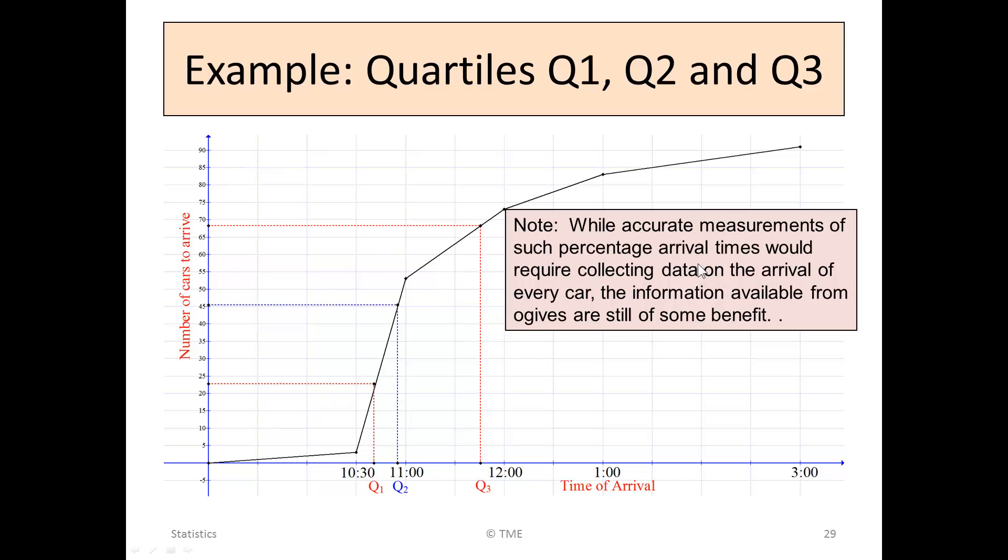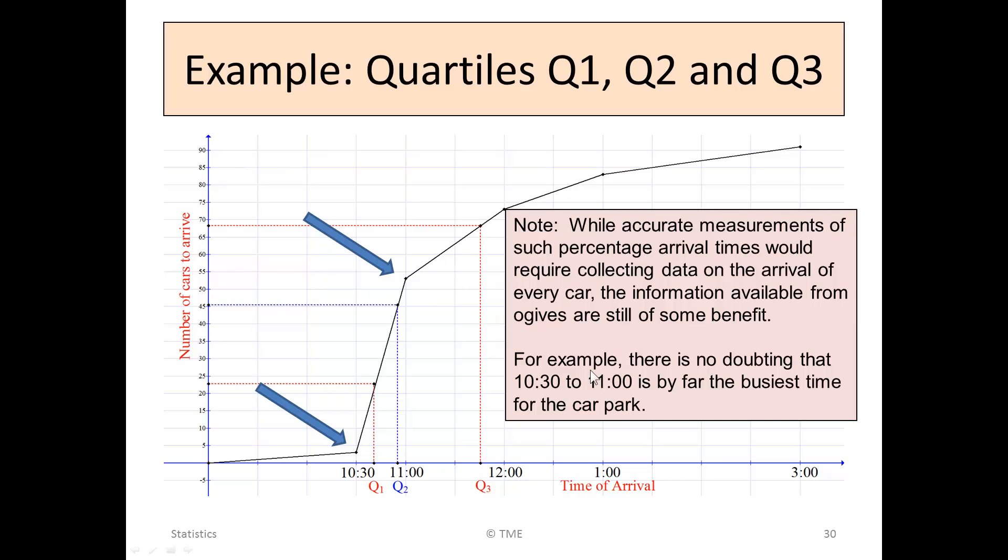While more accurate measurements need to be done, we'd have to collect every single time of every single car, but the information from the graph is still useful from the ogive. For example, we can see that between 10:30 and 11, these two points, the vast majority of the cars arrived in that space. We can see that that's the busiest time. Perhaps we might need more staff on at the car park at that time, or greater care and attention. That's the busiest period. And, that's what ogives are used for.